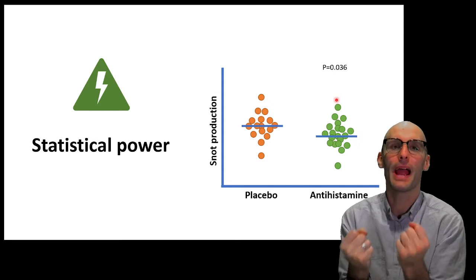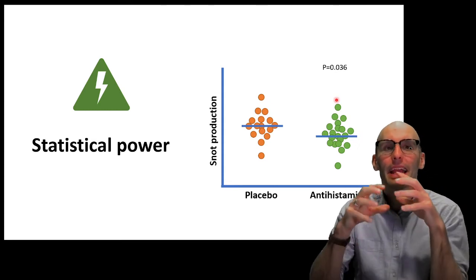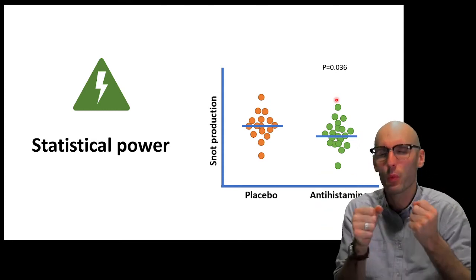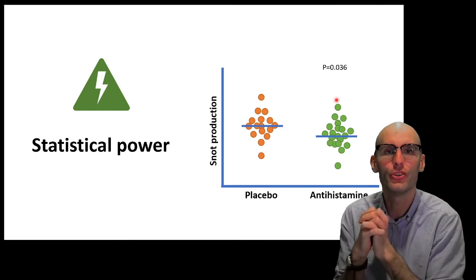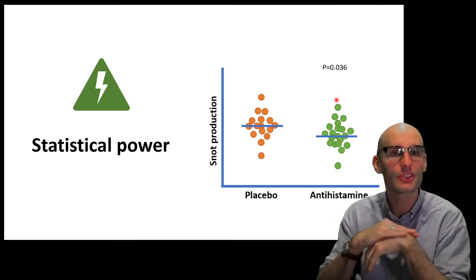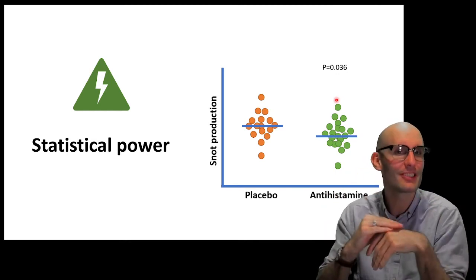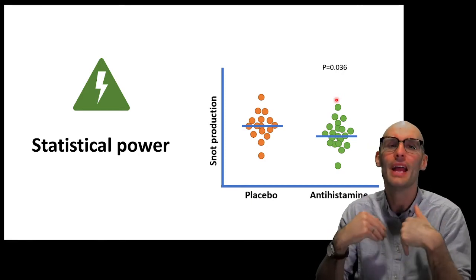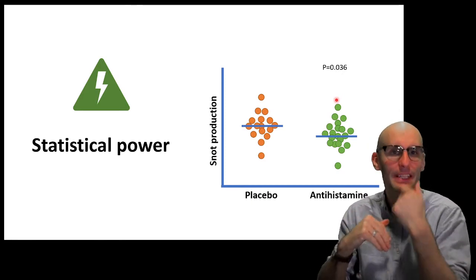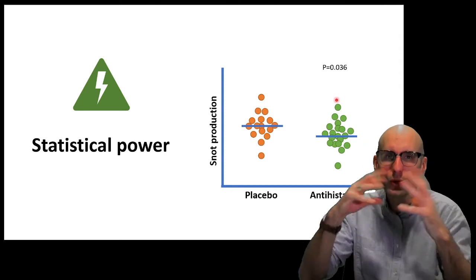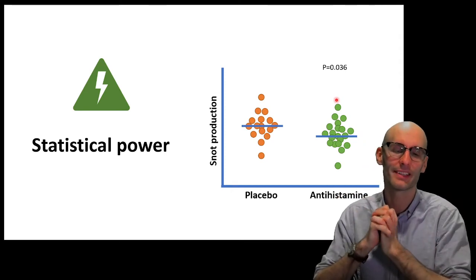So, what statistical power means is it means given how you've designed your study. What small an effect size could you detect? How small a difference could you detect? Are your results reliable, repeatable? And is the lack of significance meaningful? This is all wrapped up in this concept of statistical power.